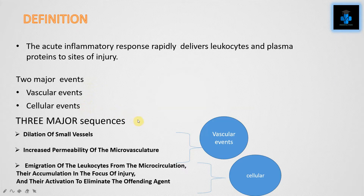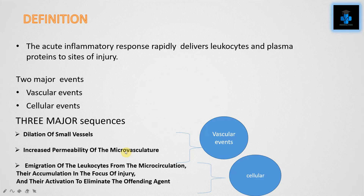The first two sequences — dilation of small vessels and increased permeability of the microvasculature — come under vascular events. The dilation of small vessels is due to histamine activity, and the permeability may be due to retraction or dropout of the endothelium.